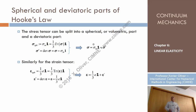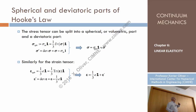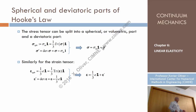The spherical part of the stress tensor is a hydrostatic stress tensor, given by the product of the mean stress — (sigma_1 + sigma_2 + sigma_3)/3, or (sigma_x + sigma_y + sigma_z)/3 — times the identity tensor. The remaining part is the deviatoric part.